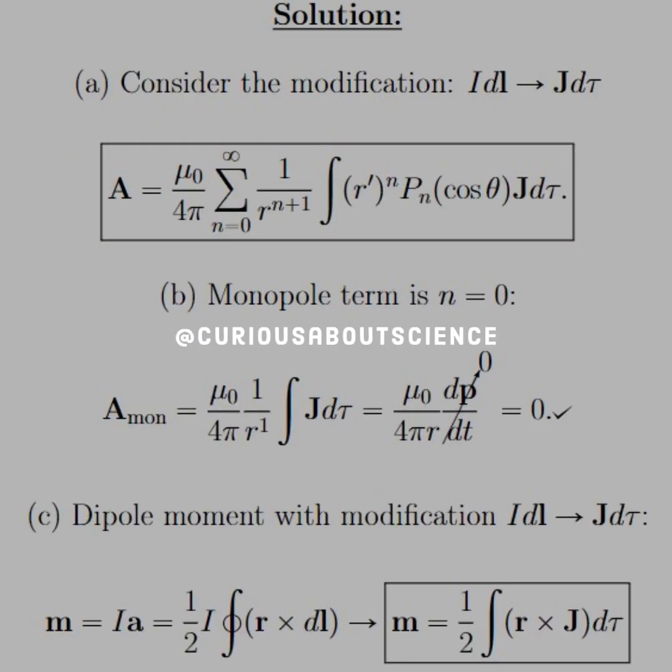All right, fair enough. This is pretty straightforward, so let's just browse through it. Consider the modification from the line current to the volume current and how that manifests itself. Now, I DL goes to J D tau, and then using the definition of the multipole expansion, we just have to substitute that in. Pretty straightforward.